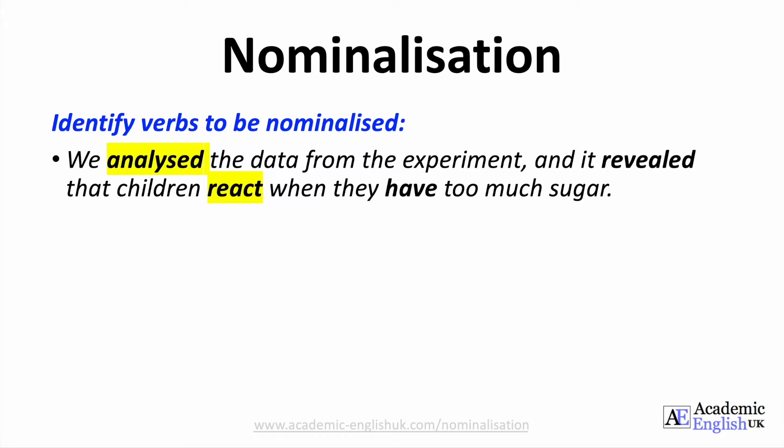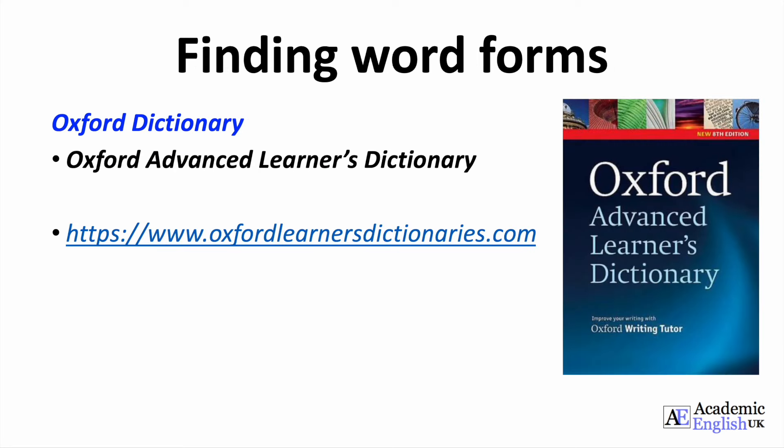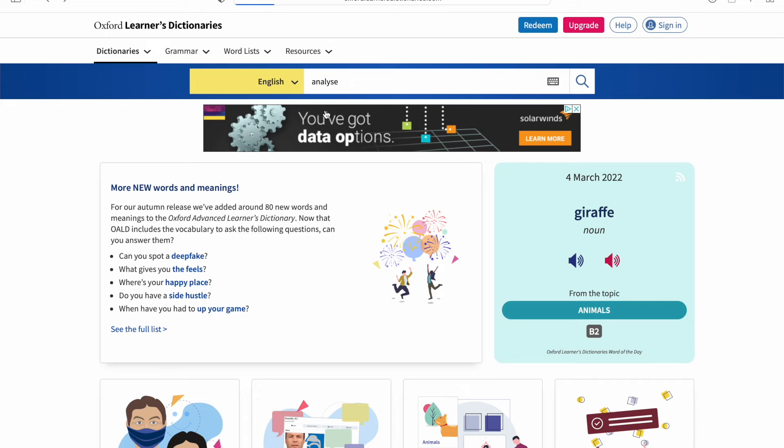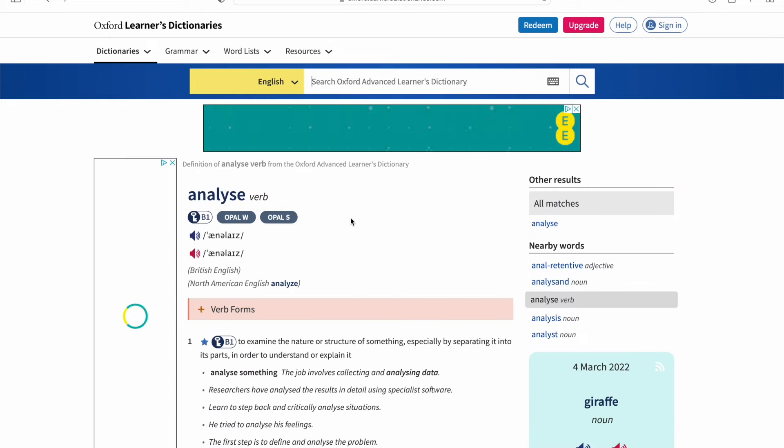The next step is to change these verbs to nouns. If you are not sure, you can use an English to English dictionary like the Oxford Advanced Learner's Dictionary to help you. The link is in the description below and on the worksheet. On the website, just put the verb into the search box and in the dictionary definition of the verb, look to the right and here are some of its word forms. The noun of 'analyze' is 'analysis'. Just a small disclaimer though — it doesn't always show all the word forms and you may need to use a variety of dictionaries for this.